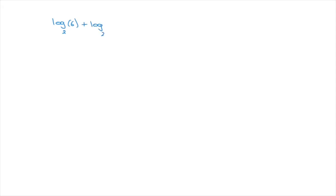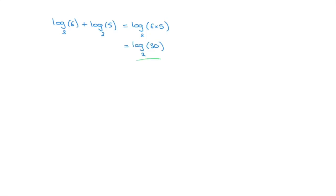Say we're given the expression log base 2 of 6 plus log base 2 of 5, and we're asked to simplify this expression. We notice right away that we have two logarithms being added, and both are written in the same base, which in this case is 2. So we can use the rule we just learned: this equals log base 2 of 6 times 5, which is log base 2 of 30. And that's the answer — we've just simplified this logarithmic expression.